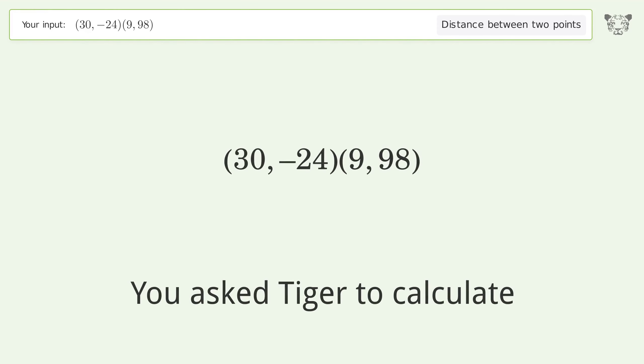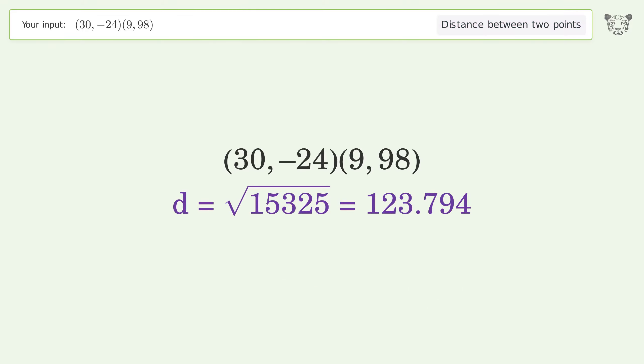You asked Tiger to calculate the distance between two points. The distance between the two points is the square root of 15,325 or 123.794.